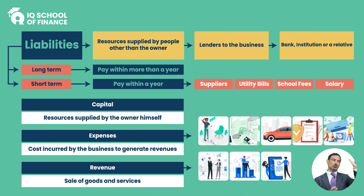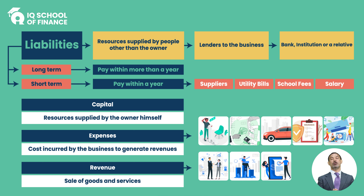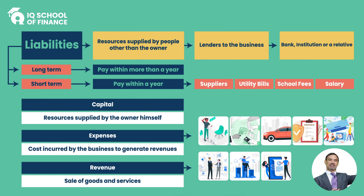अब last में summary: हमने पाँचों heads को आज discuss किया - assets, liabilities, capital, expenses and revenues। Assets: तमाम resources जो business में रखे। Liabilities: वो assets के लिए लोगों से borrow किया। Capital: owner ने अपने personal resources लगाए। Expenses: business start करने के लिए खर्चे किए। और यह सारी चीज़ें हमने revenues generate करने के लिए की हैं। So it's all about the heads of account।